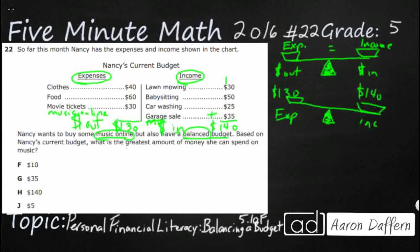What is the greatest amount she can spend? She doesn't have to spend all of that money, but what is the greatest amount she can spend on music in order to maintain a balanced budget? Let's look at our options. If she were to spend an extra $10 on music online, let's take her expenses of $130 and add $10 — that gets us $140. Her income is $140, so that would make a balanced budget. That works.